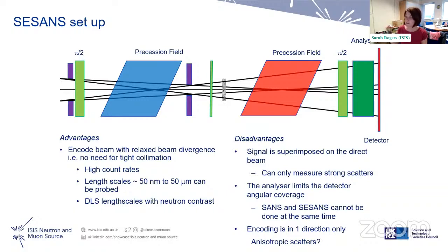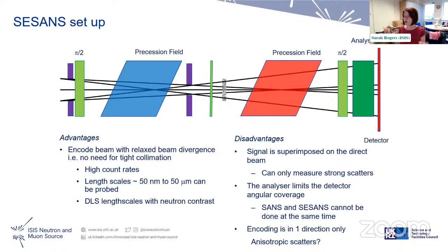At the minute, SANS and C-SANS cannot be run at the same time — you have to do either one or the other. And people often want to measure both the SANS and the spin echo SANS of their sample, so it can be a very long measurement time if you need to do both.